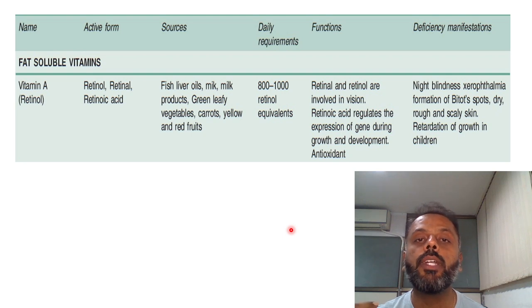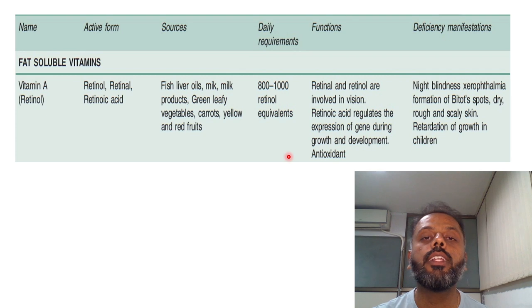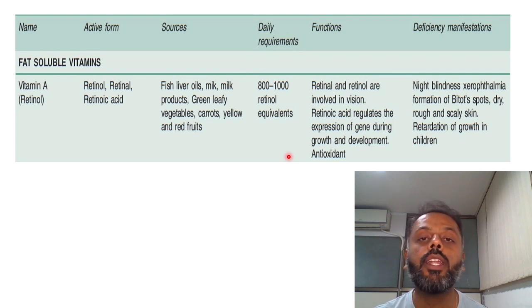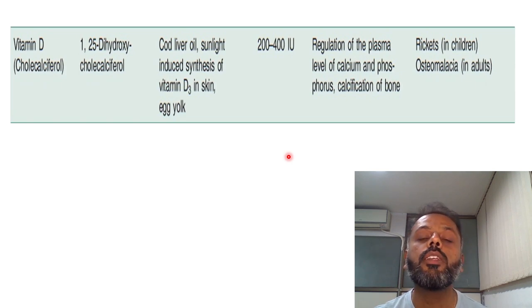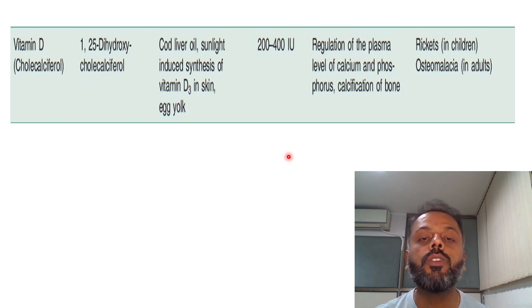The daily requirement of vitamin A is 800 to 1000 retinol equivalents. Now, the second important vitamin is vitamin D, which is known as the sunshine vitamin because it is synthesized with the help of sunlight in the skin from 7-dehydrocholesterol. The active form of vitamin D is 1,25-dihydroxycholecalciferol, also known as calcitriol, and its activation occurs in two organs: first the liver and then the kidney.